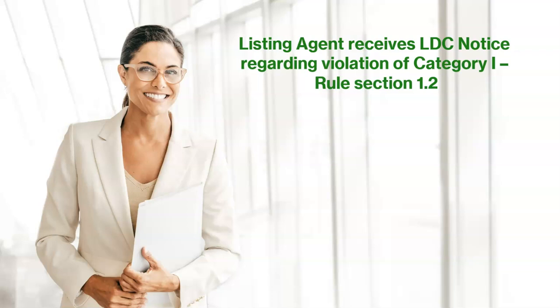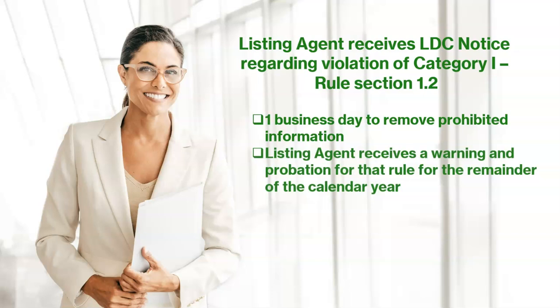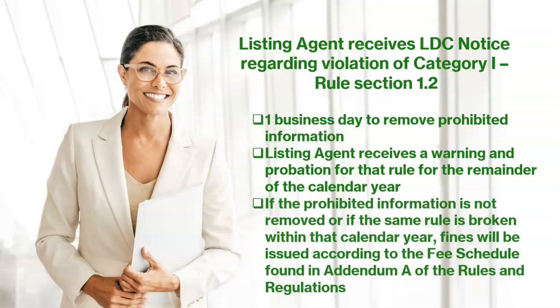When a listing agent receives the LDC notice regarding violation of Category Rule 1.2, they are given one business day to remove the prohibited information. A warning is issued and probation for the remainder of that calendar year. If the information is not removed or the same rule is broken within the calendar year, fines will be issued according to the fee schedule.